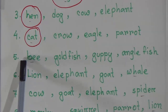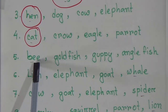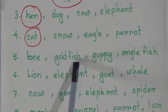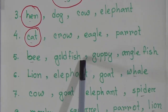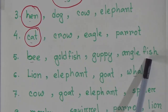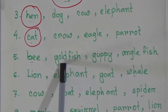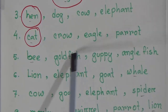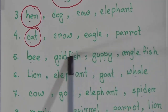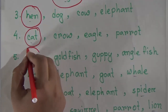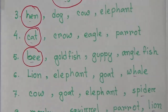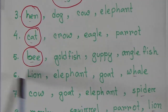Our fifth odd one out is: bee, goldfish, guppy, angelfish. Goldfish, guppy, and angelfish are pet fish that we keep in water — they are water animals. But bee is an insect, so bee is the odd one out here.